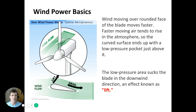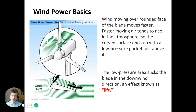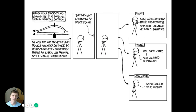When air moves over the rounded face of the blade, it tends to move faster. Faster moving air tends to rise in the atmosphere, and when that happens you have a pocket of air where there's lower pressure. That lower pressure area of air then sucks the blade in the downward direction.